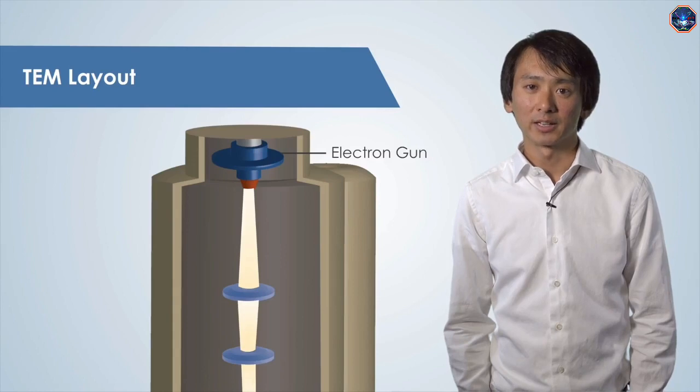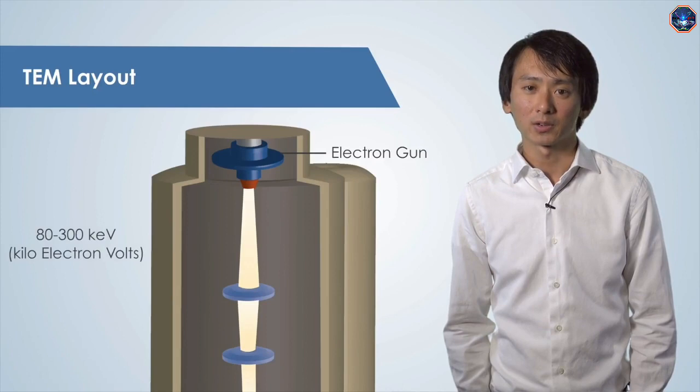Once the beam is generated, it travels down the column. These electrons are at high energy, around 80 to 300 keV. Before imaging a sample, this beam is aligned to ensure optimal imaging.